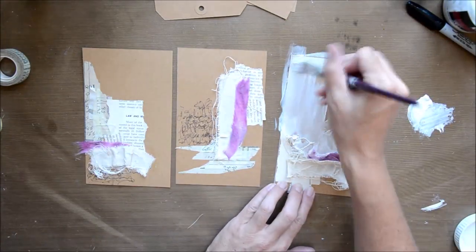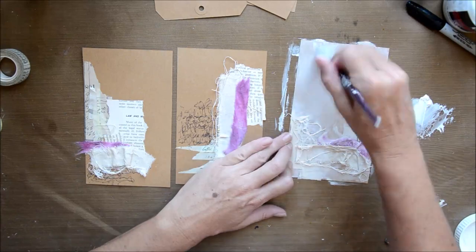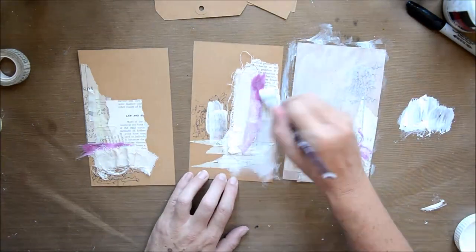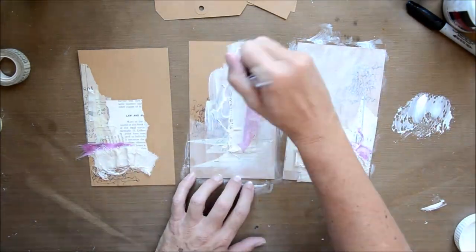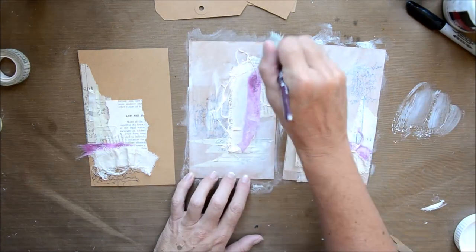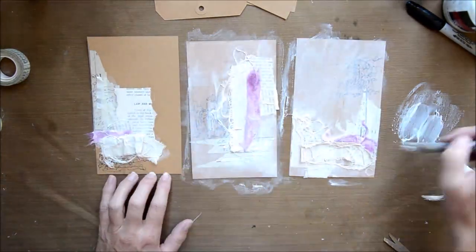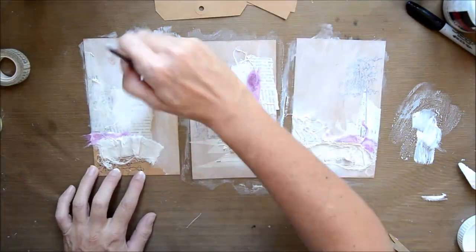Then I decided that I wanted to cover the whole tag with just a light gesso wash. I've got the Atelier Primer gesso, which I really like. It's really thick, but to do this I add a bit of water into the mixture just to really thin it down.